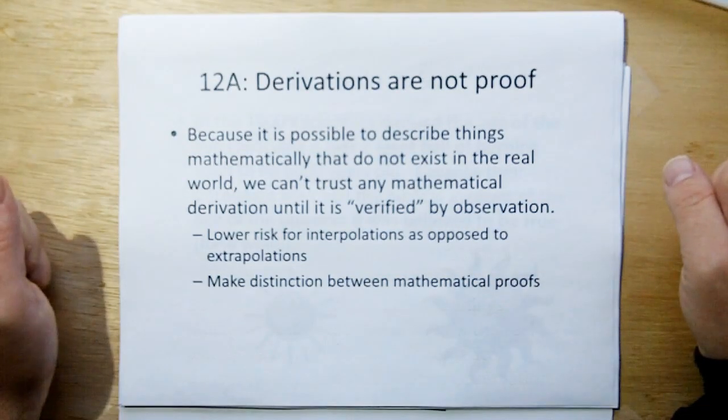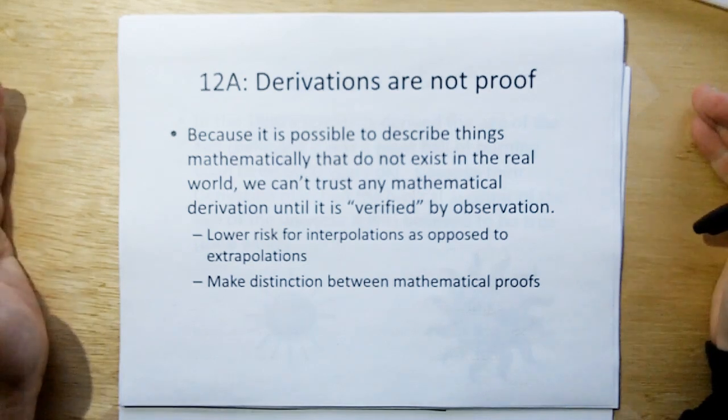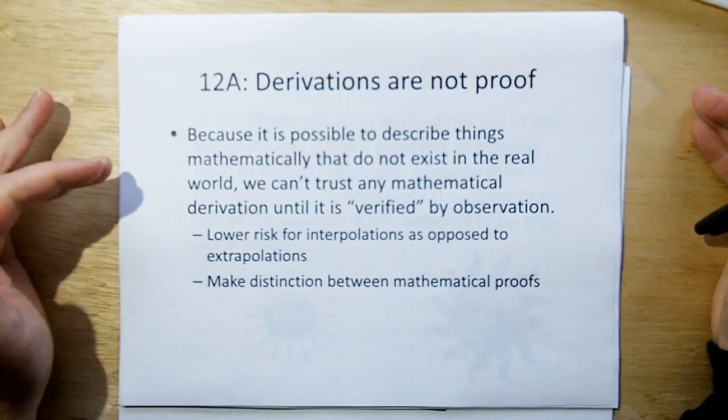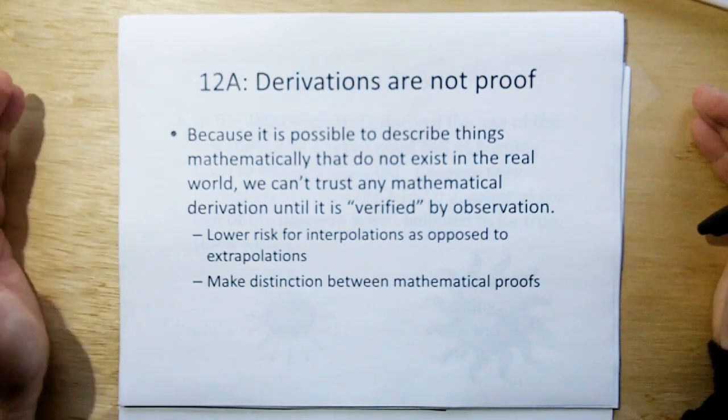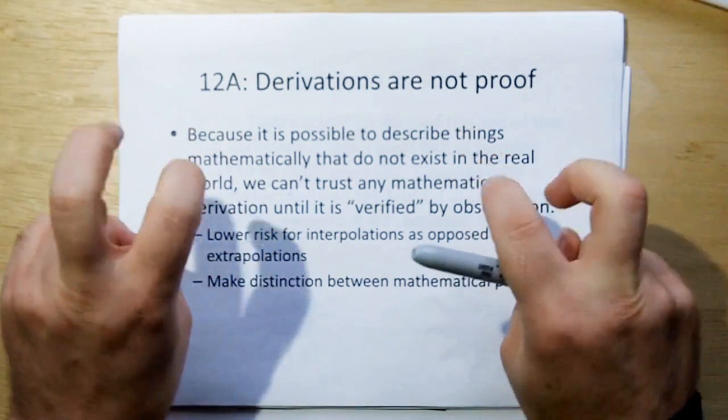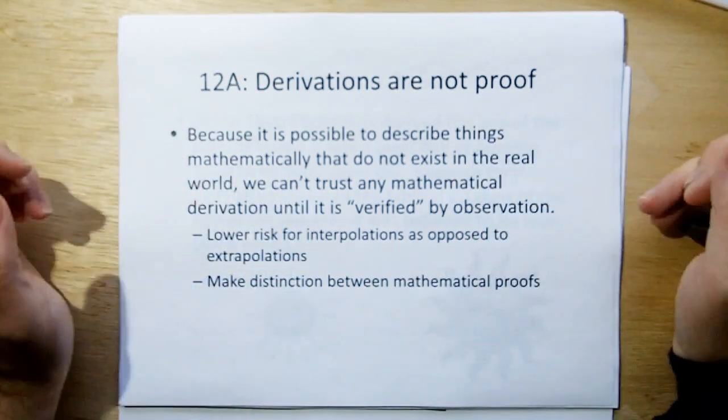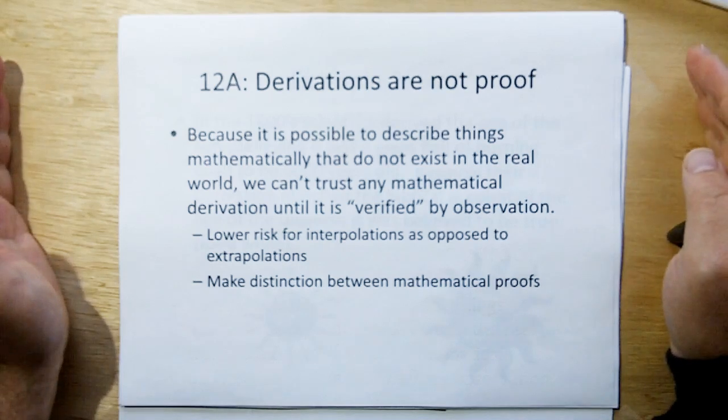So, just because you can follow the rules of mathematics doesn't mean that what you derive is true. And in fact, what they derive is not reality in terms of physics. Rule of acquisition 12a, derivations are not proof. Because it's possible to describe things mathematically that do not exist in the real world, we can't trust any mathematical derivation until it's verified by observation. All you're doing is taking an observation that agrees with a theory or a derivation. It doesn't mean the theory or derivation is true.